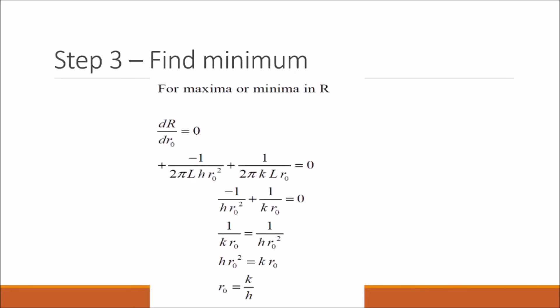To find any minimums or maximums in R, we need to set this derivative equal to zero. If we do this and solve for r₀, we end up with r₀ equals k over h.